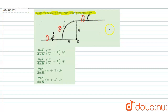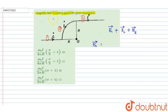Magnetic field is a vector quantity. We have to find the total magnetic field due to the first section plus the second section plus the third section. For the first section, since this is an infinite long rod, the magnetic field at point O due to the end point is equal to zero.